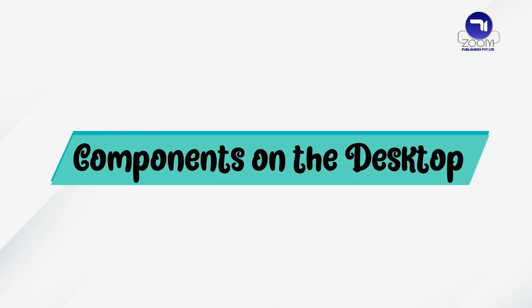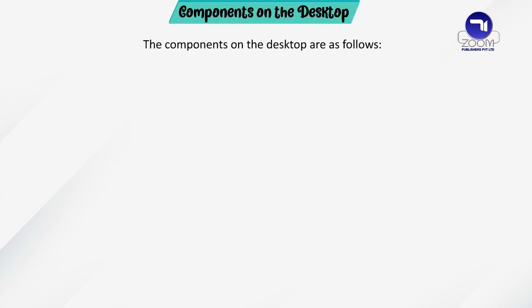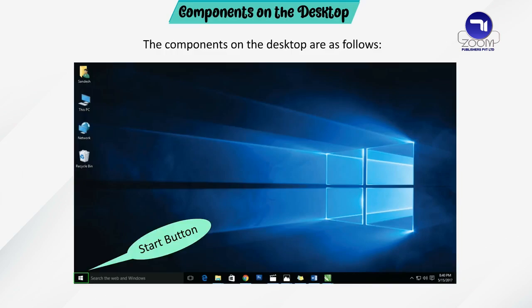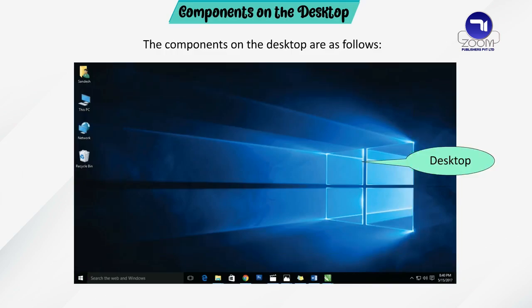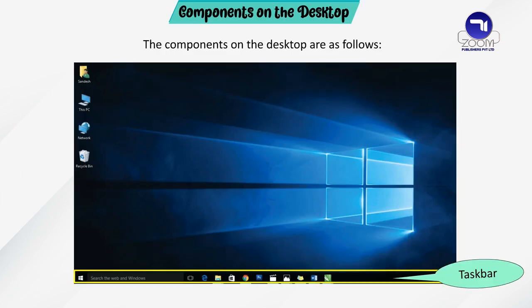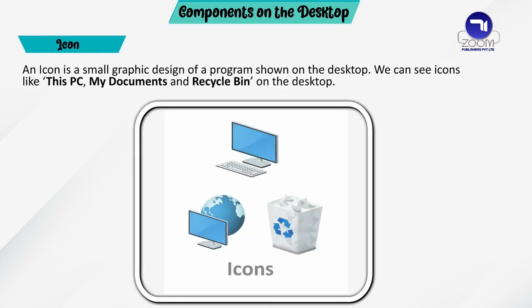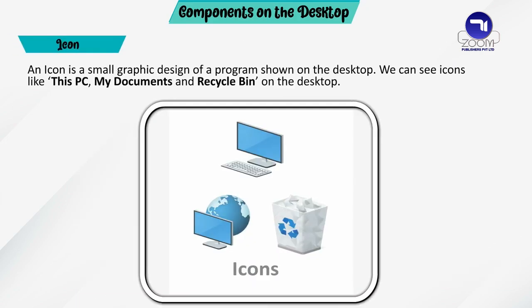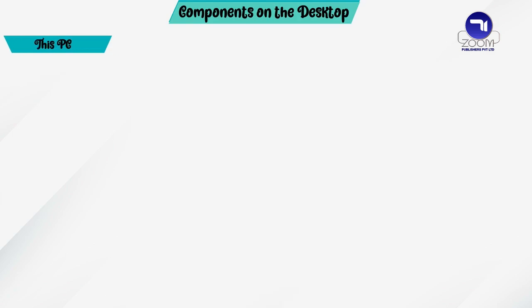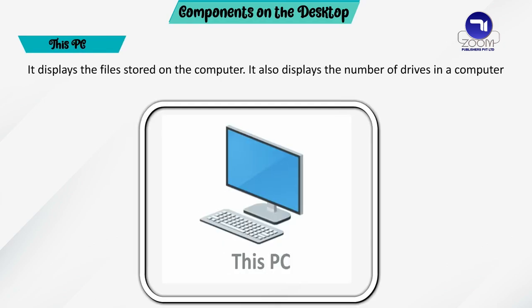The components on the desktop are as follows: Icons, Start button, Desktop, and Taskbar. An icon is a small graphic design of a program shown on the desktop. We can see icons like This PC, My Documents, and Recycle Bin on the desktop.